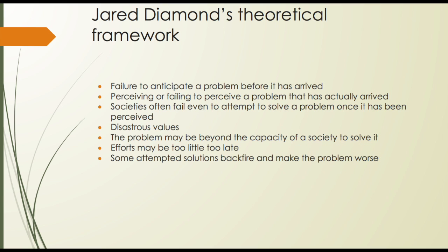The theoretical framework we decided to focus on was Jared Diamond's framework, which focuses on seven different aspects. The first is failure to anticipate a problem before it has arrived — sometimes society has no prior experience with the issue arising, so they're not aware and can't fully comprehend the danger, often falling back into old customs and analogies that have no correlation to the current situation. The second is perceiving or failing to perceive a problem that has actually arrived, meaning the origin of a certain problem is indistinguishable and can't be recognized.